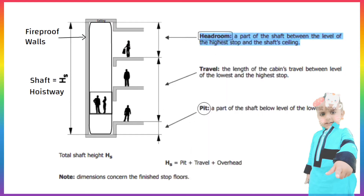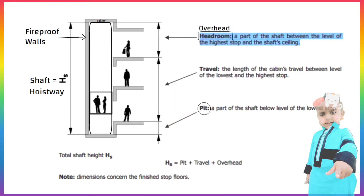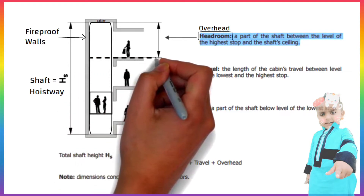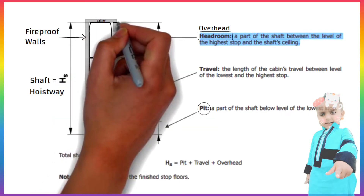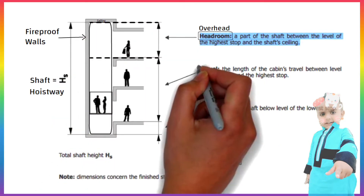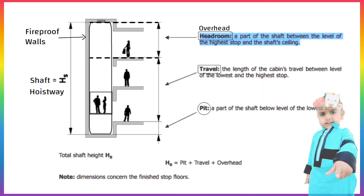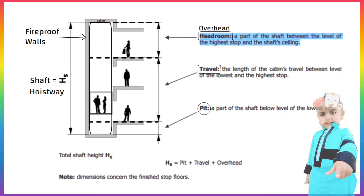Headroom, also known as overhead, is a part of the shaft between the level of the highest stop and the shaft's ceiling. Travel Height is the length of the cabin's travel between the level of the lowest and the highest stop.